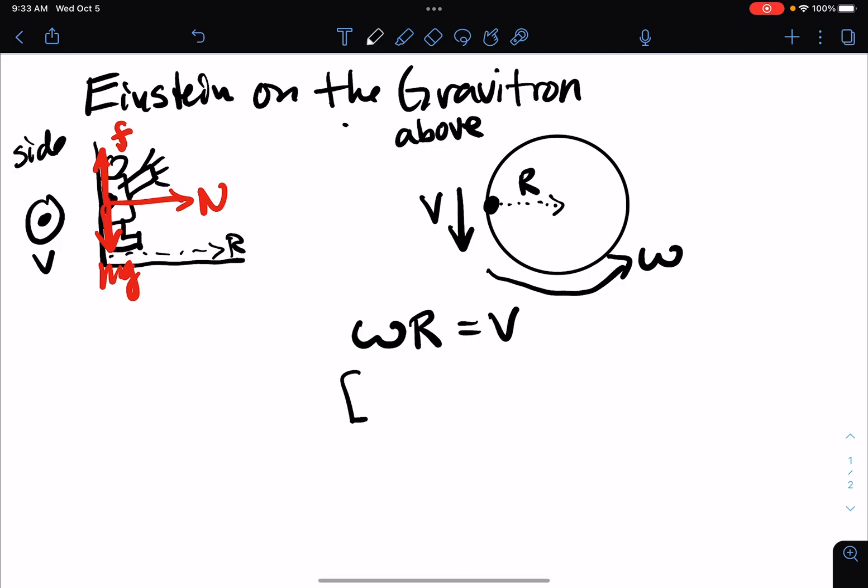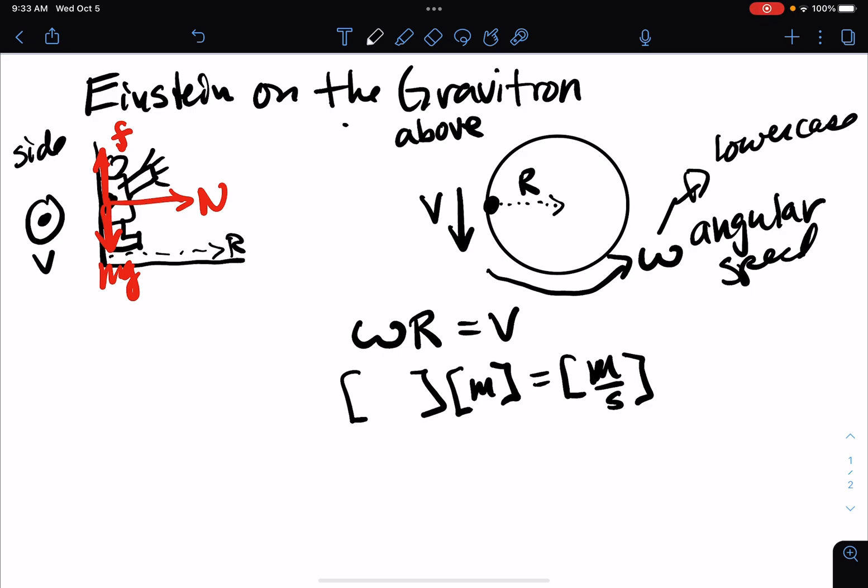So the units here, let's come back to omega. The units for radius is meter. The units for speed is meter per second. The units for angular speed, omega, and this is a lowercase omega, the units here are radians per second.